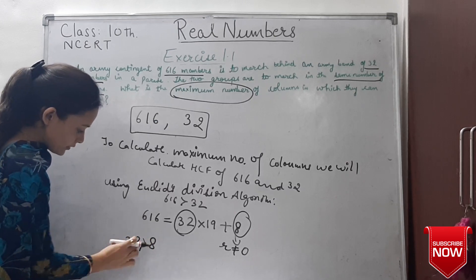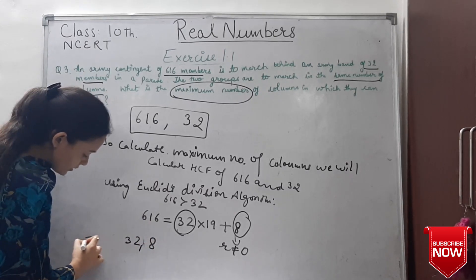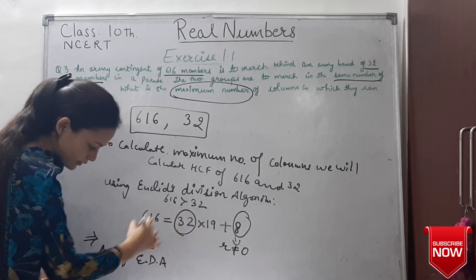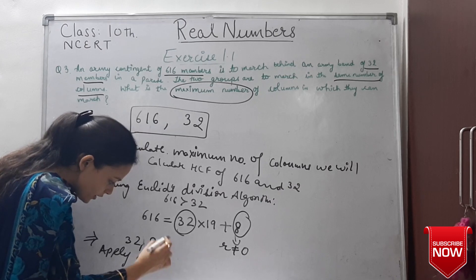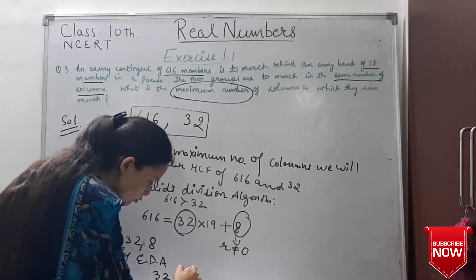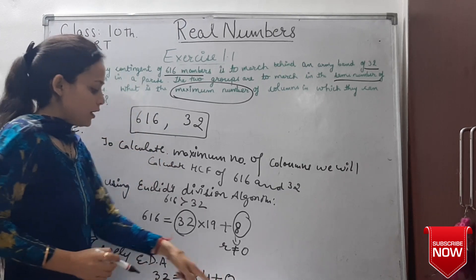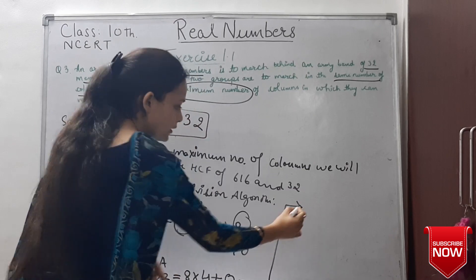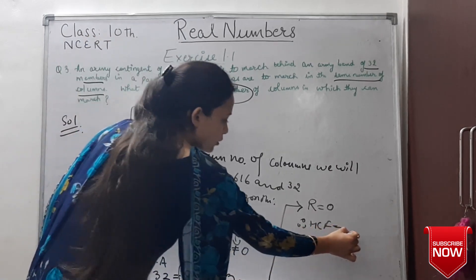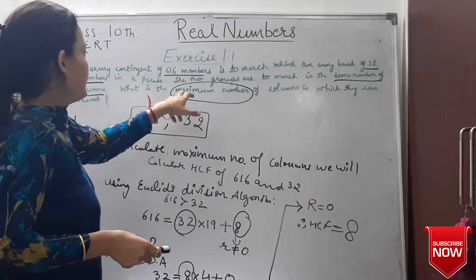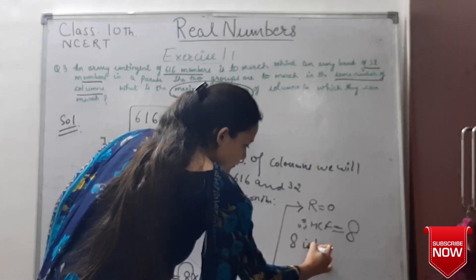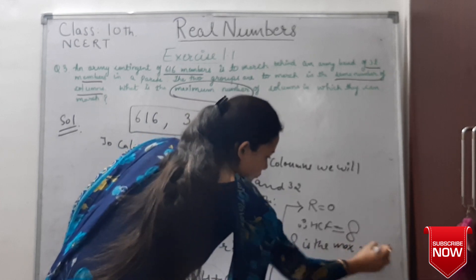Now 32 is greater than 8, so we apply Euclid's division algorithm again. We divide 32 by 8: 8 multiplied by 4 is 32, so the remainder is 0. Since the remainder is 0, we stop. Therefore, the HCF is our divisor, which is 8. This means 8 is the maximum number of columns in which they can march.